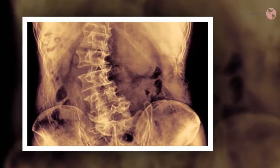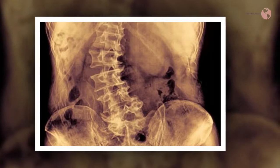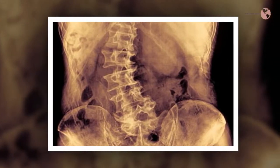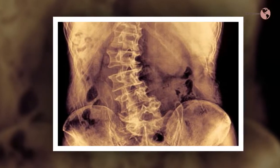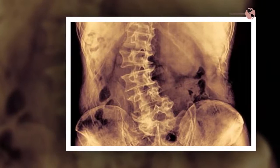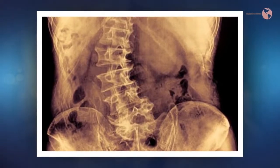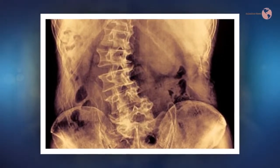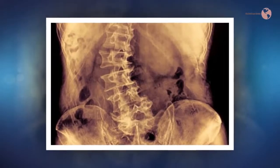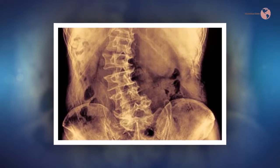Some research shows that scoliosis may have a genetic cause — approximately 30 percent of people with idiopathic scoliosis have a family history of the condition. Many of the medical conditions that can cause scoliosis are genetically inherited. Currently, researchers do not think lifestyle habits such as poor posture, inactivity, or diet play any role in the development of scoliosis, though they may play a role in worsening symptoms.